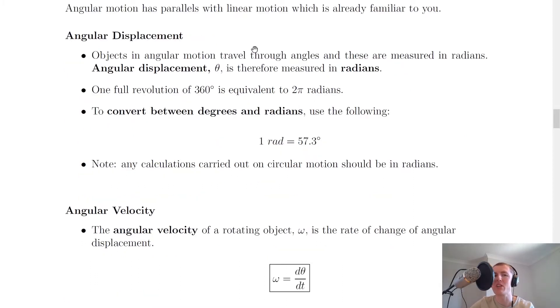The first one we'll look at is angular displacement. It says here that objects in angular motion travel through angles and these are measured in radians. Angular displacement theta is therefore measured in radians. So we've got this new quantity angular displacement, given the symbol theta, measured in units of radians.